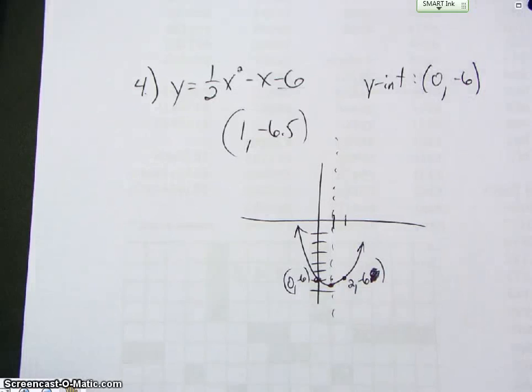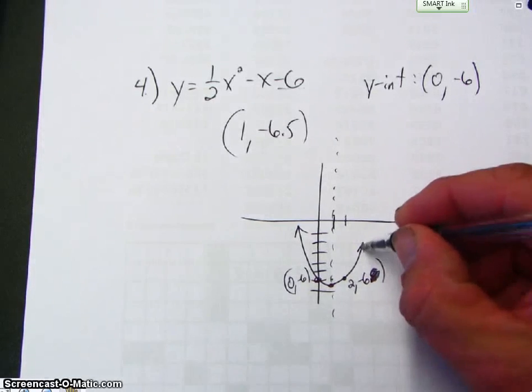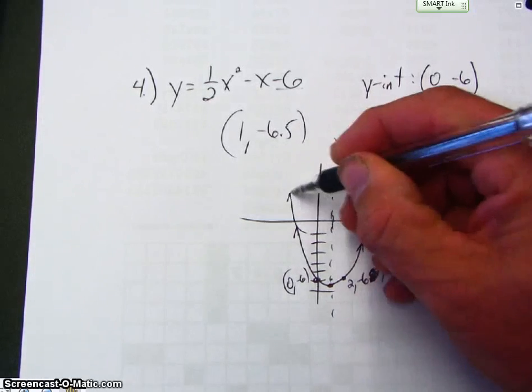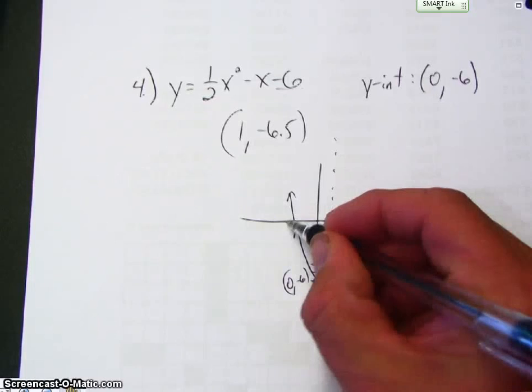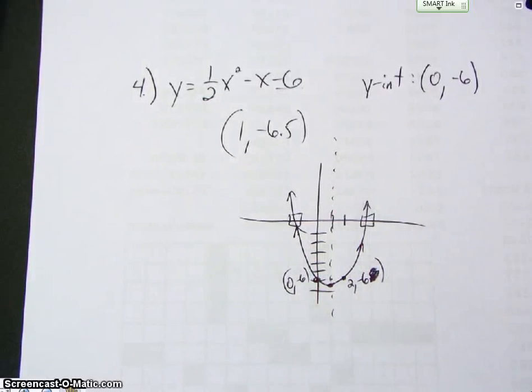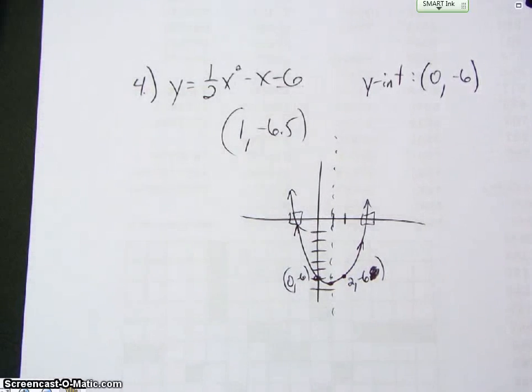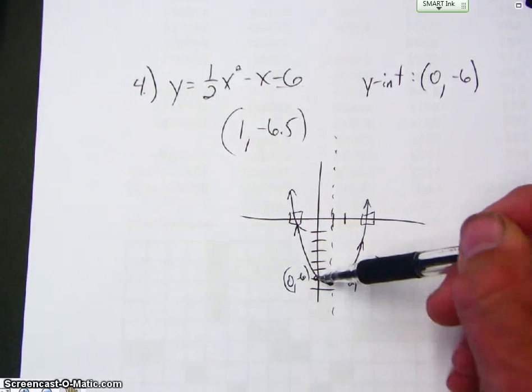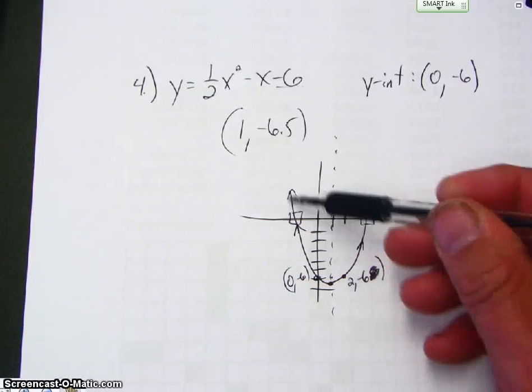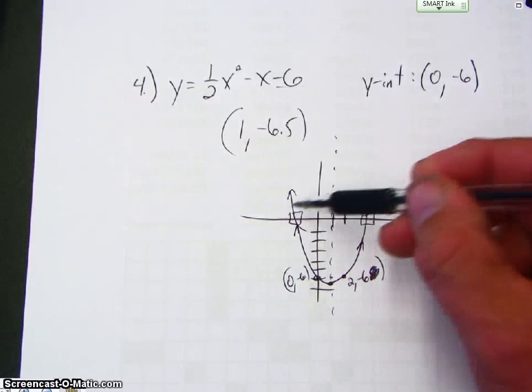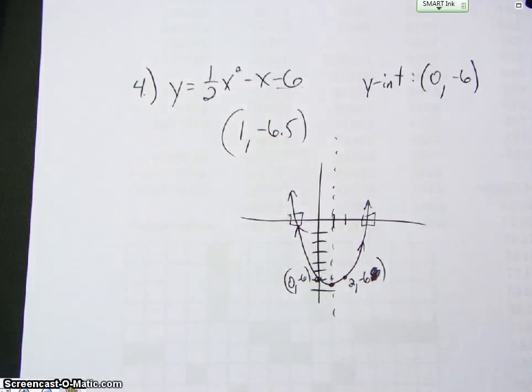Now, in this problem, if you notice, if I continue, I end up having two x-intercepts. Later on in Chapter 4, you're going to learn how to find those x-intercepts. So just find the vertex, the y-intercept, and a third point to graph it. And then you'll also have to find the x-intercepts as well.